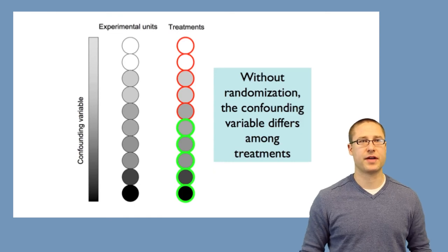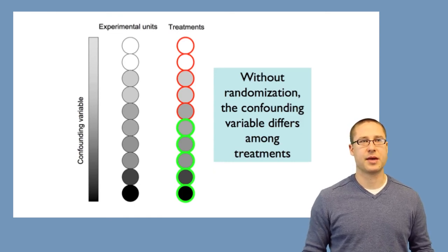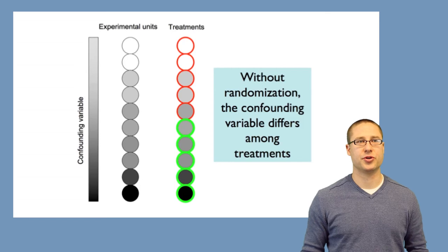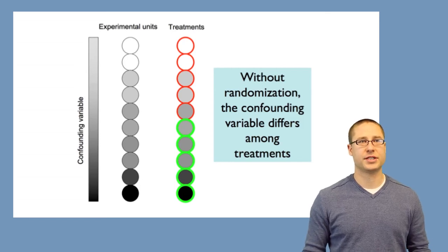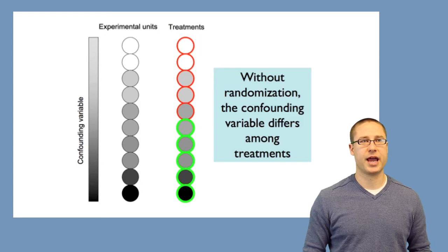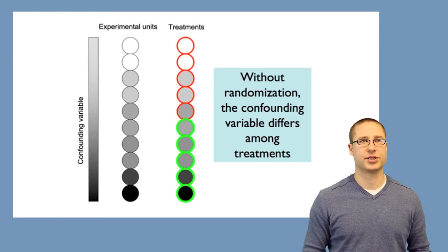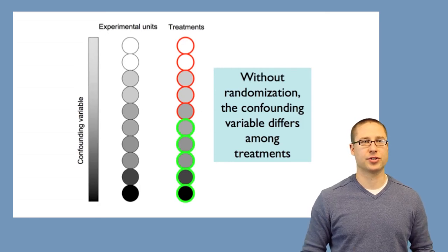How do we deal with these potential confounders? One way is randomization. So imagine, for example, that we're trying to do a comparison. Without randomization, you might see experimental units — shown as circles — being assigned treatments, represented as red and green circles.